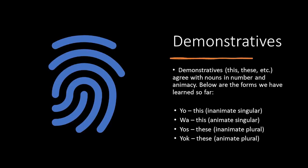Demonstratives also agree with nouns in animacy and number. We learned four terms so far: yo — this, inanimate singular; wa — this, animate singular; jos — these, inanimate plural; jok — these, animate plural.